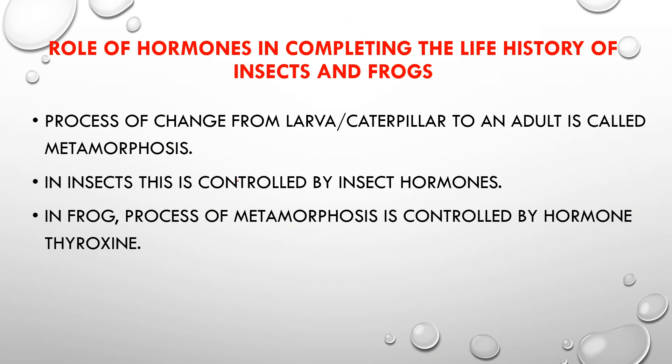Let's discuss the role of hormones in completing the life history of insects and frogs. When a caterpillar passes through various stages to become an adult, or a tadpole passes through stages to become a frog, hormones play a key role. In insects such as the mosquito, the life cycle goes: egg, then larva, then pupa, then adult. In a butterfly, the cycle also starts with an egg, after which it becomes a caterpillar larva.